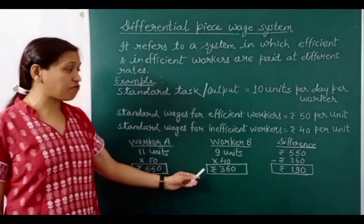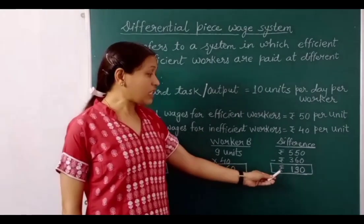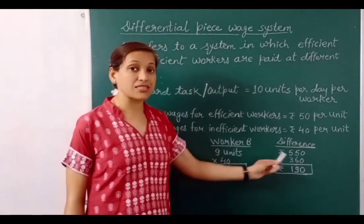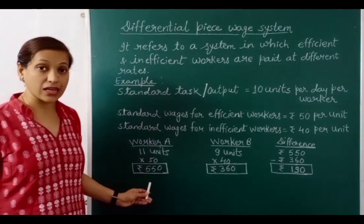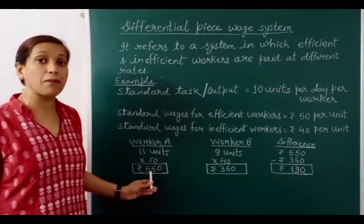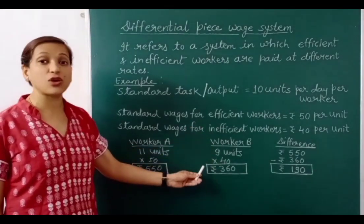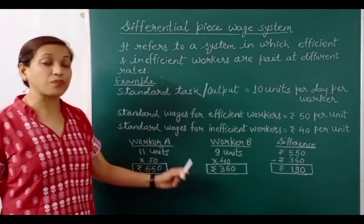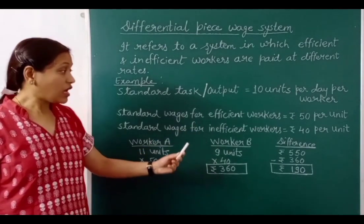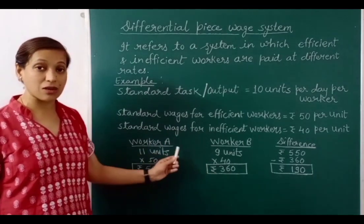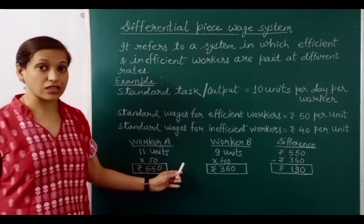The difference in wages is Rs. 190, which serves as a reward for the efficient worker to maintain productivity, and as motivation for the inefficient worker to increase productivity and earn more. In the differential piece rate system, incentives are directly linked to productivity.